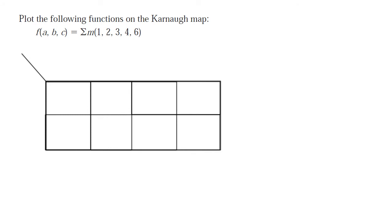You're given a three-variable K-map problem and asked to plot the following functions on the K-map, given the function in the form of minterms. We're not only going to do that, but we're also going to find the minimum Boolean expression possible.